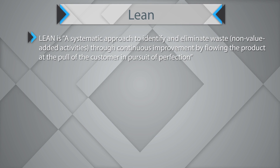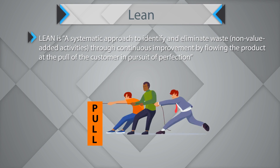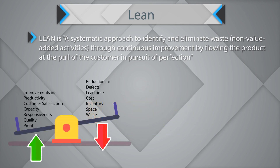Lean is a systematic approach to identify and eliminate waste or non-value-adding activities through continuous improvement by flowing the product at the pull of the customer in pursuit of perfection. By implementing Lean, we look at reductions in defect, lead time, cost, inventory, space and waste, while improving productivity, customer satisfaction, capacity, responsiveness, quality and profit. By using Lean, we are looking at a systematic approach targeted at reduction of waste.